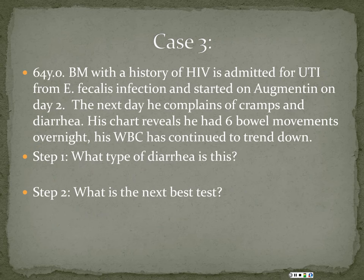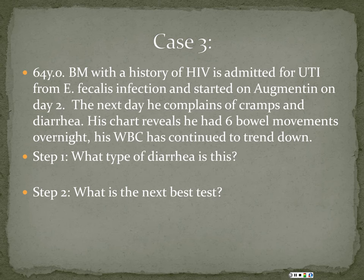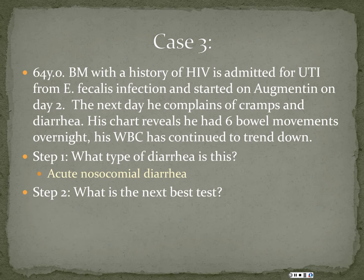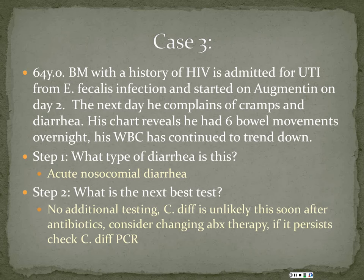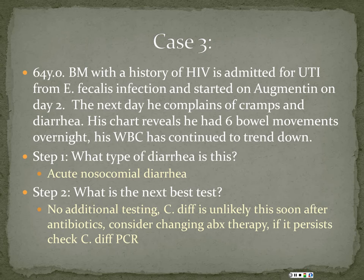Case 3: A 64-year-old male with HIV is admitted for a UTI due to Enterococcus faecalis and started on Augmentin on day two. On day three, he develops cramps and diarrhea with six watery bowel movements overnight. His white count has continued to trend down. This is acute nosocomial diarrhea. The next best step is to consider changing antibiotics or stopping diarrhea-inducing drugs — C. diff is not indicated here, because the diarrhea started just one day after antibiotics. C. diff typically takes at least three days to develop, and if the patient worsens with rising white count and infectious signs, then reassess and consider C. diff testing.